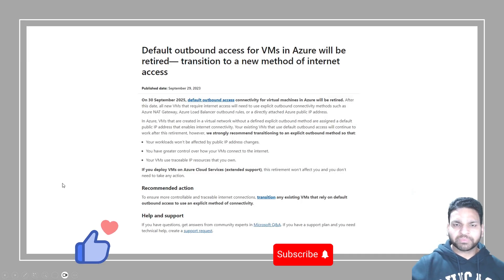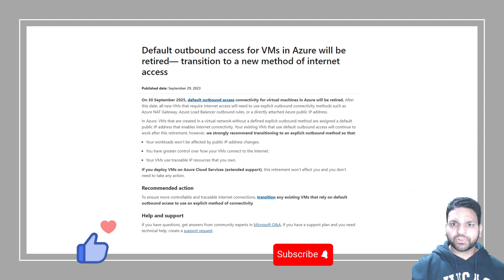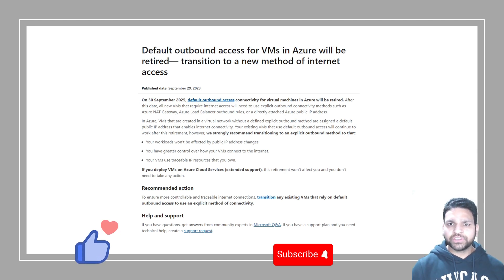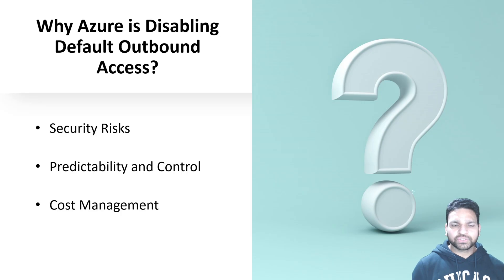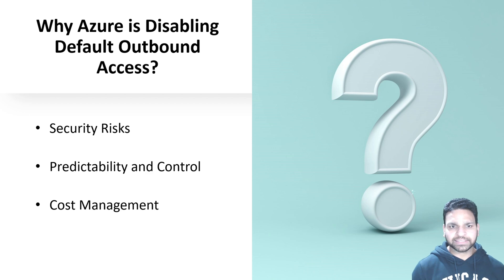This is a screenshot of the Microsoft announcement where it's mentioned that the default outbound access connectivity for virtual machines will be retired, and you have to explicitly define the outbound connectivity for all virtual machines in Azure after that. The first question is why Azure is disabling the default outbound access, and there are three reasons for it.